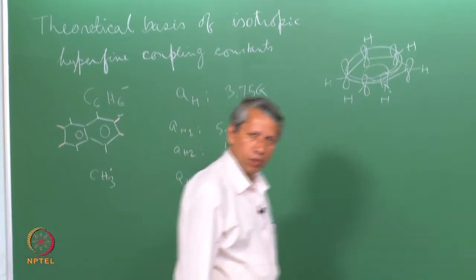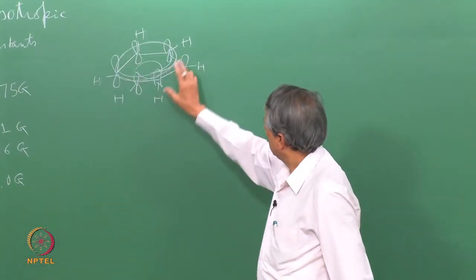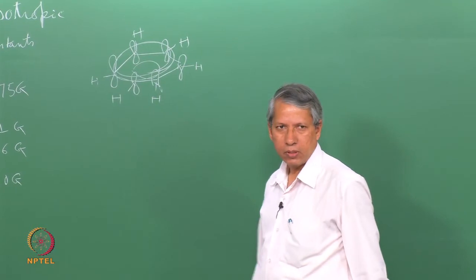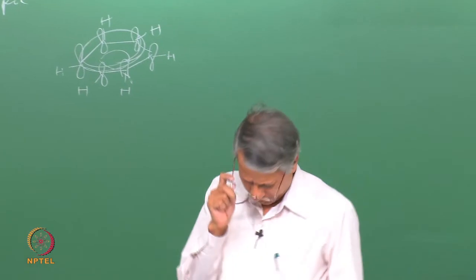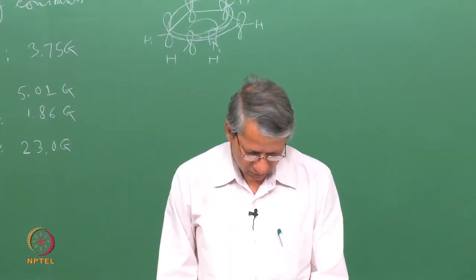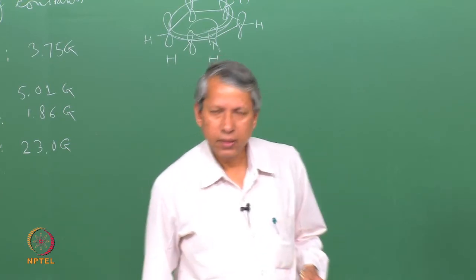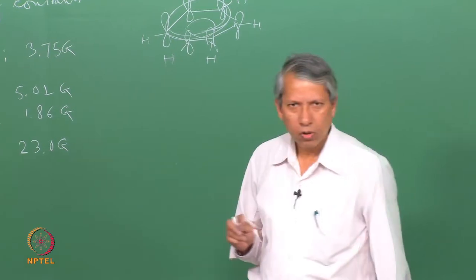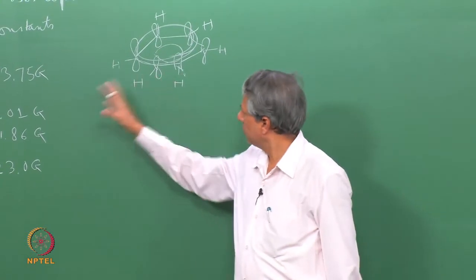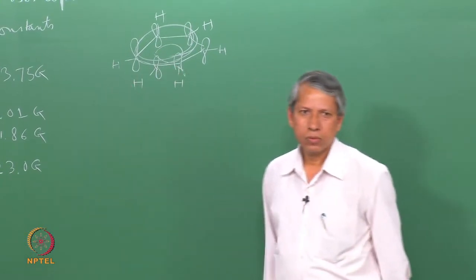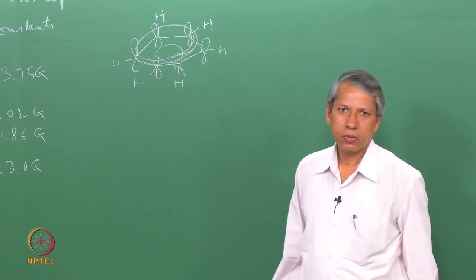There is immediately a problem: the wave function giving this electron distribution cannot predict these hyperfine splitting constants. Does it mean we have to do very sophisticated quantum mechanical calculations? Luckily, there are very simple molecular orbital concepts that can be used to make very good predictions of the coupling constants that such nuclei can give.